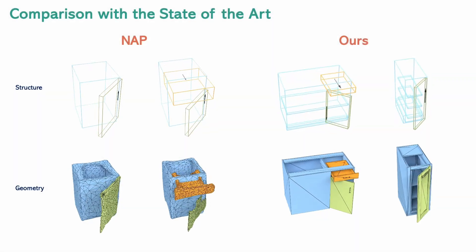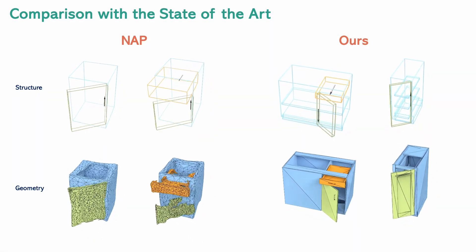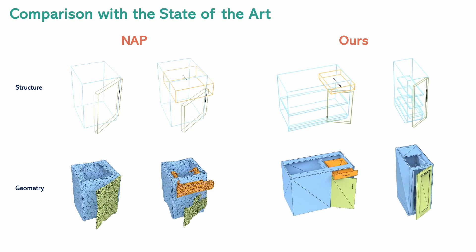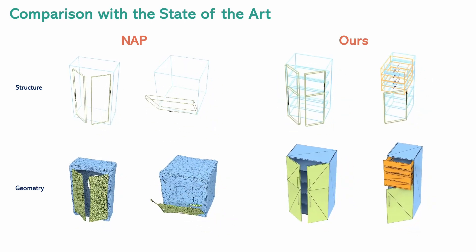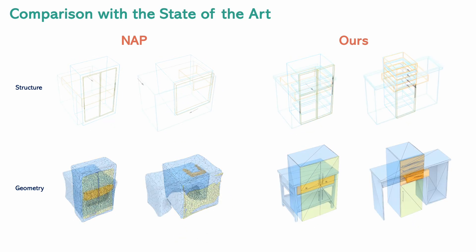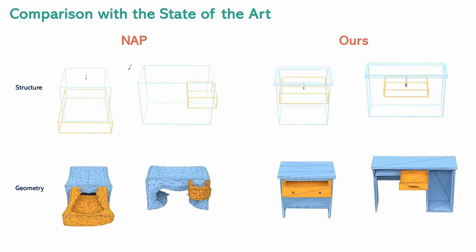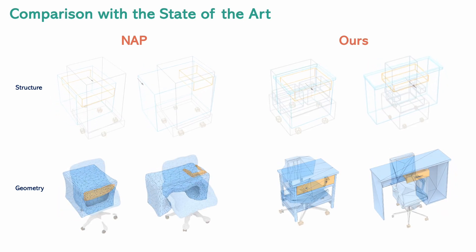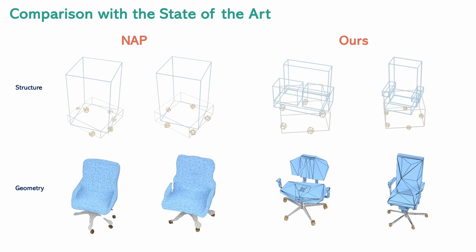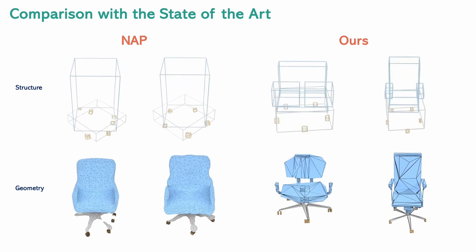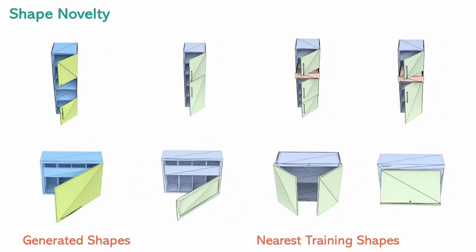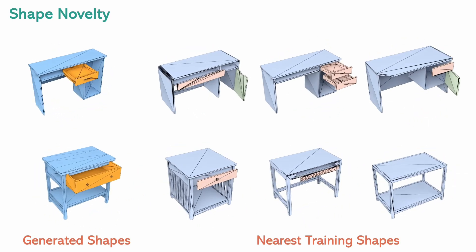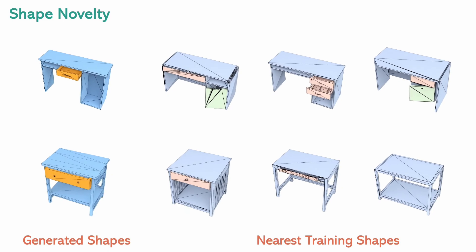The resulting articulated mesh can be animated into different articulation states based on the joint predictions at the structure level. We compare our method to the state-of-the-art articulated object generation approach NAP, which generates articulated structures and part geometry features with final geometry reconstructed through neural field isosurfacing. In contrast, our mesh generation produces compact meshes with sharp geometric details and improved shape coherence. We show the nearest neighbors to our generated shapes in terms of chamfer distance, illustrating our model's capacity to generate new articulated objects different from the training set.